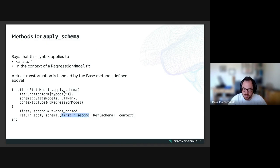And then it calls the base method here where it actually calls this function, the caret function on the first and second arguments, and then recursively applies schema to the expanded arguments there. And that's all.